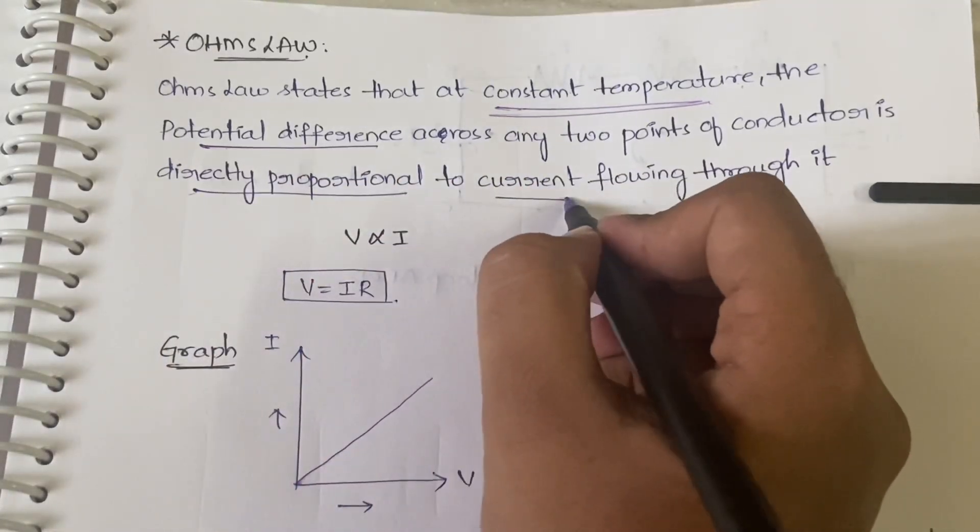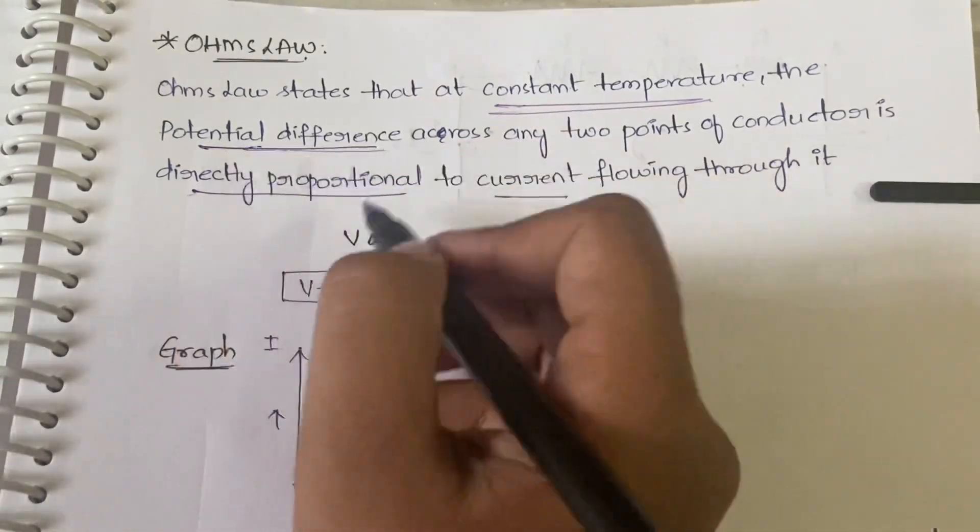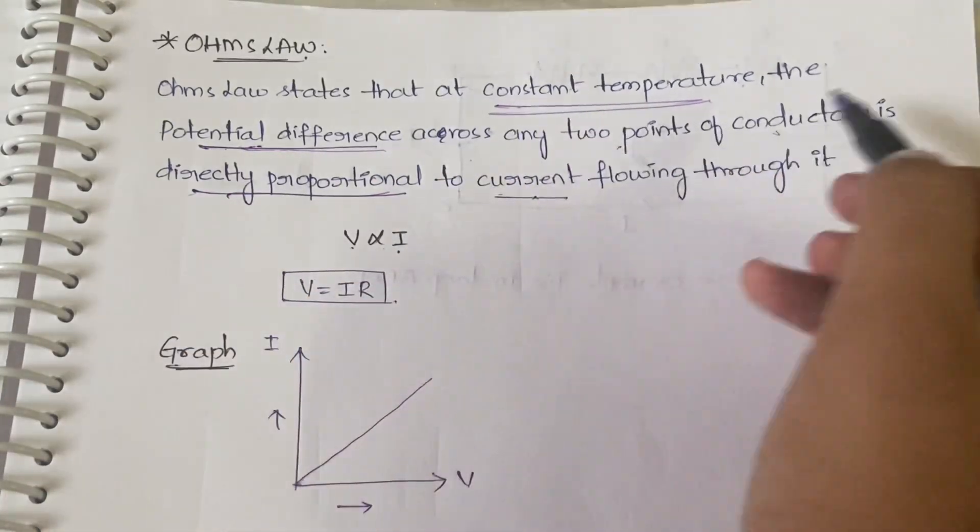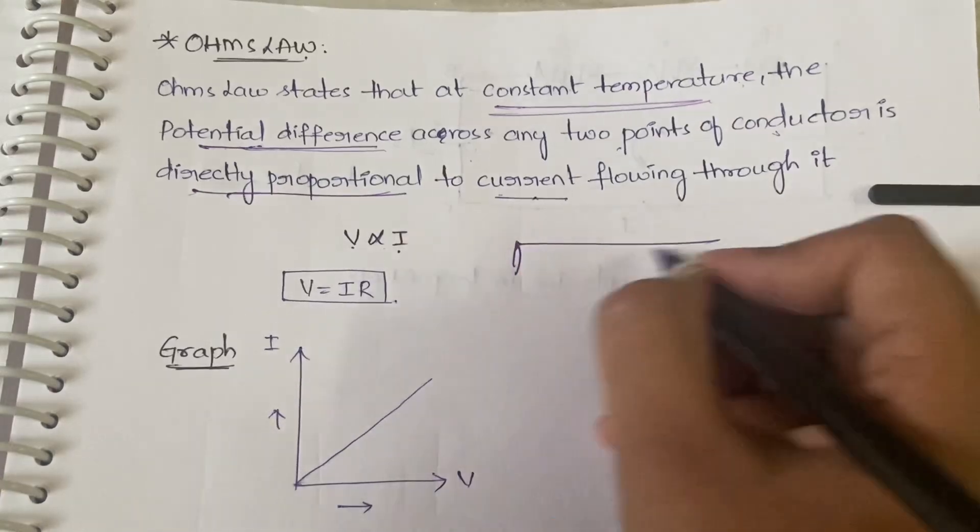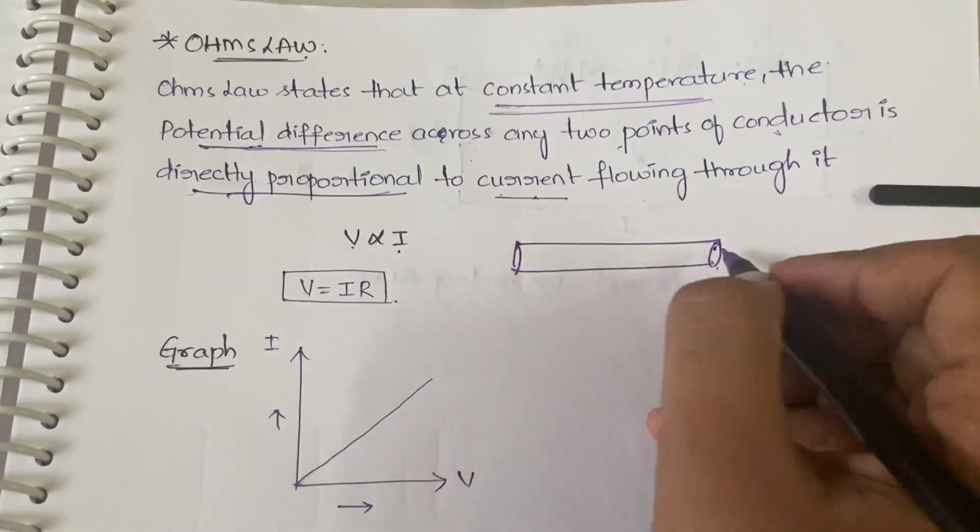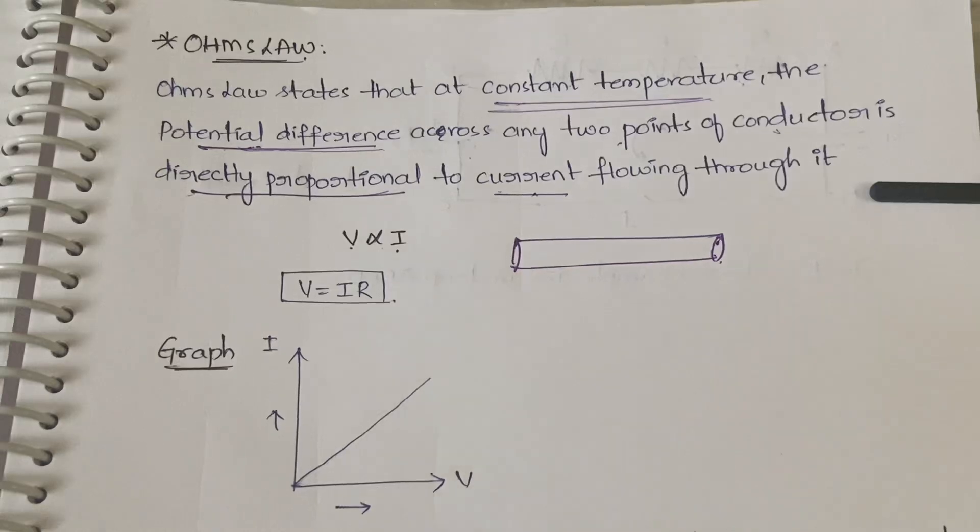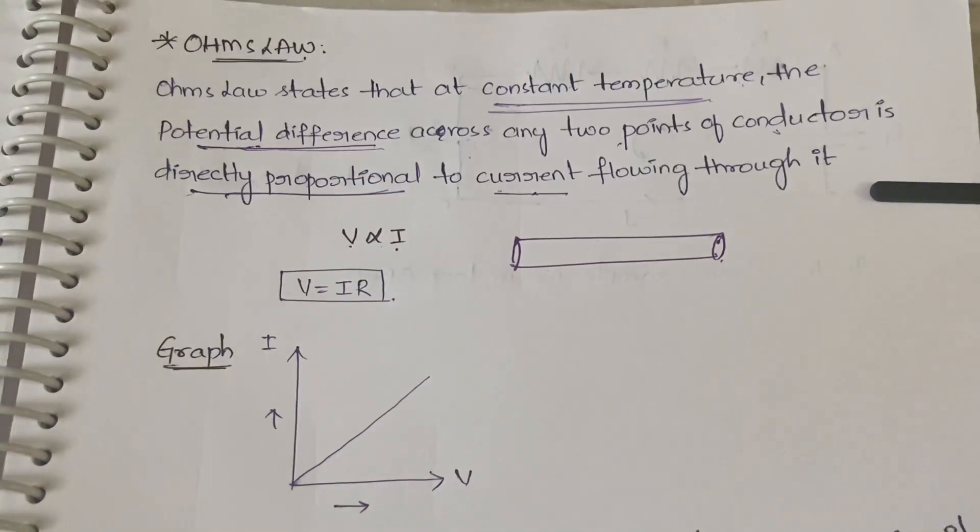Which is nothing but potential difference V directly proportional to the current I. Across any two points of the conductor, suppose you take a conductor, in this conductor you take any two points, so between those two points whatever potential difference is there.